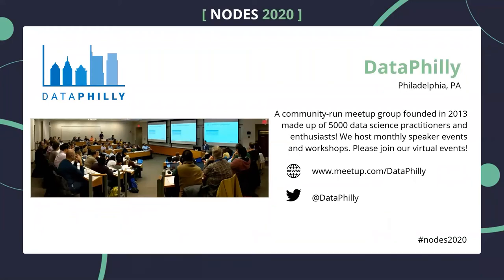Hello everyone. I'm Rama Nathan, one of the organizers of Data Philly, a community-run meetup group in Philadelphia, USA. Founded in 2013, we have grown to over 5,000 data science practitioners and enthusiasts. We host monthly speaker events and workshops focused on the latest technologies and concepts in data science. You can follow us on Meetup and on Twitter. Even if you live outside Philadelphia, we invite you to join our virtual events.